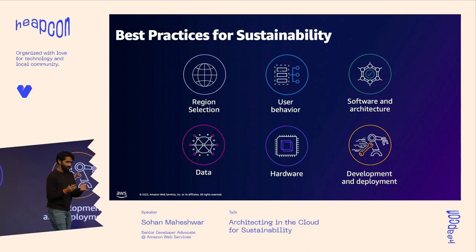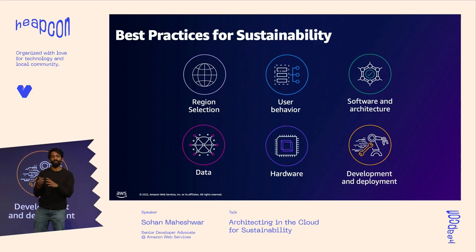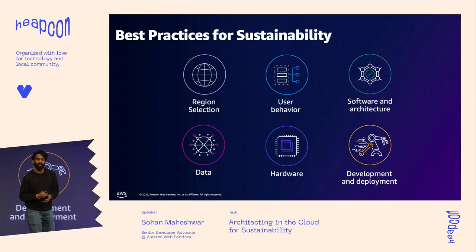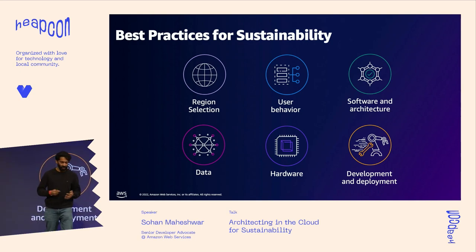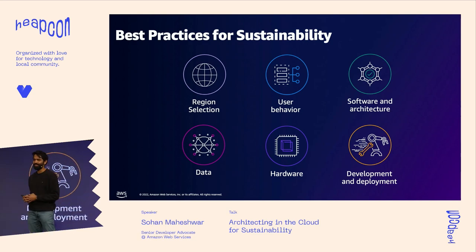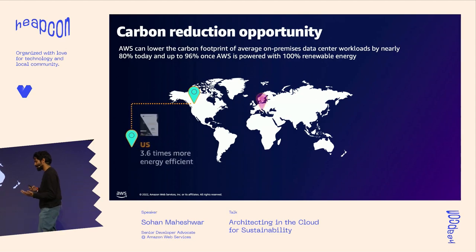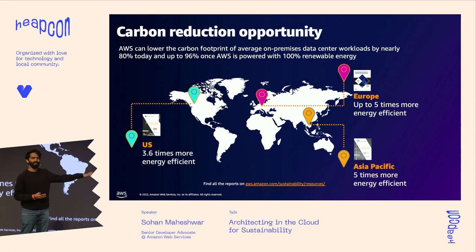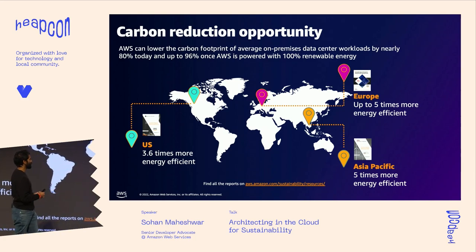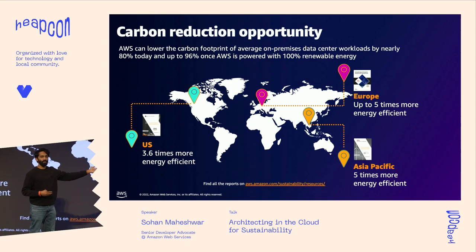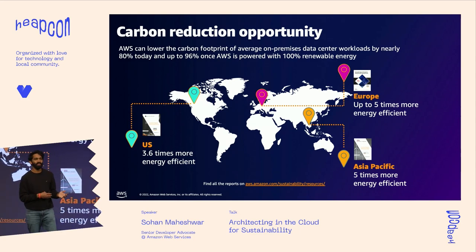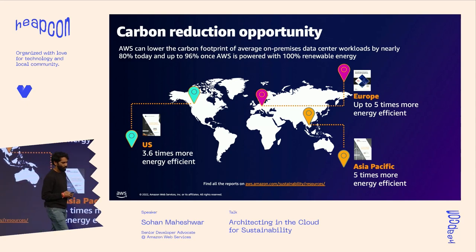Starting with region selection: those of you using AWS know there are AWS regions like EU West 1 or US East 1, which are physical locations with clusters of data centers. Typically people choose regions based on where their customers are, or due to data residency requirements. But if you don't have such constraints, you can choose regions that are more energy efficient — choosing a region in Europe or Asia Pacific can be up to five times more efficient.